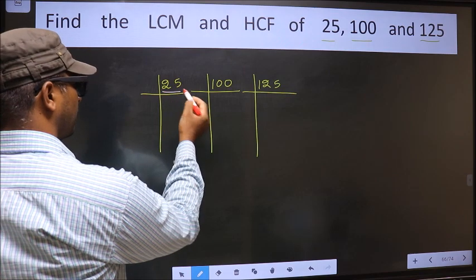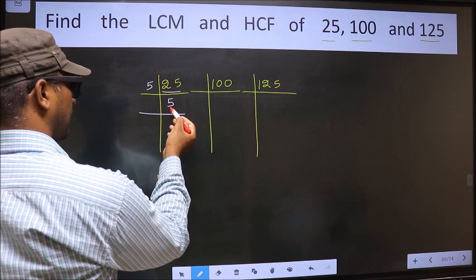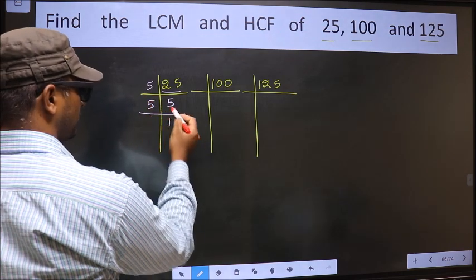First number is 25. 25 divided by 5 is 5. Now we have 5, 5 is the prime number, so 5 once 5.